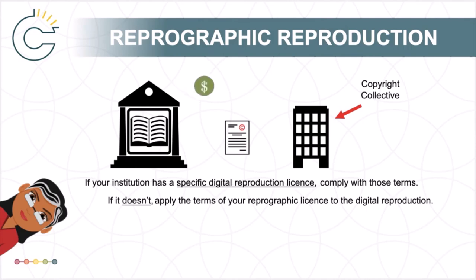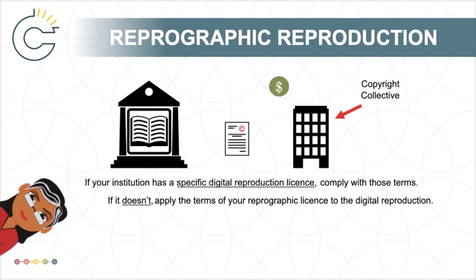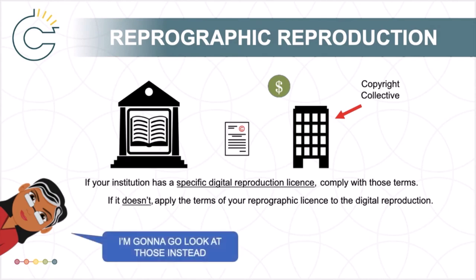If an institution has been paying royalties to a collective voluntarily under an interim tariff and then enters into a digital reproduction license agreement with the collective, or if a tariff that applies to the digital copies being made is approved at a new royalty rate, there may be a difference in the amount of royalties that the institution owes the collective for digital copies going forward. When we said these exceptions were bewildering, we were not kidding. Have we mentioned the fair dealing exceptions? Those exceptions are looking pretty good right about now.